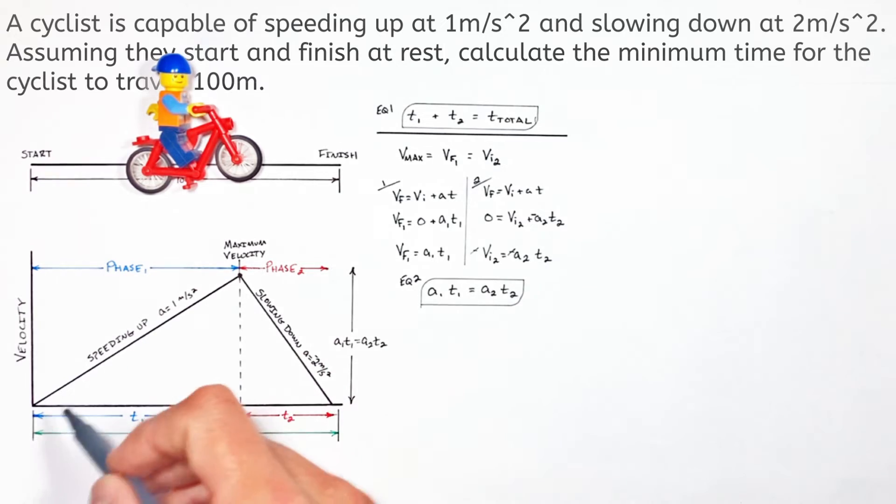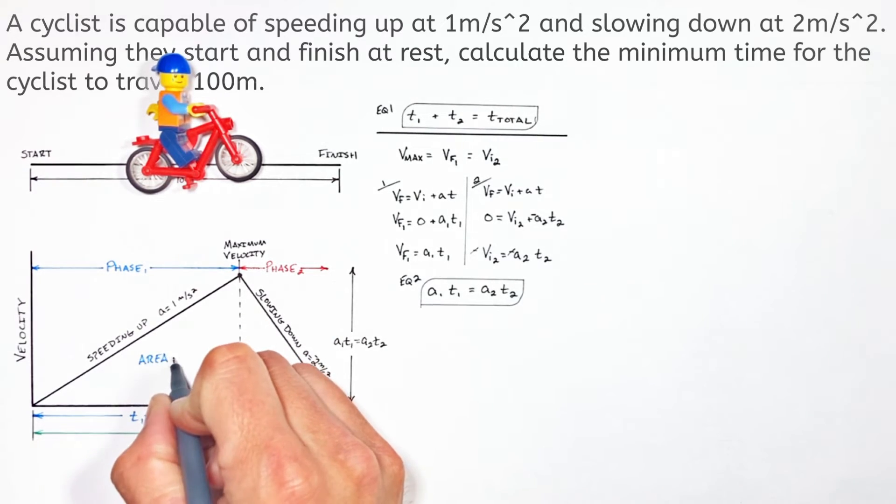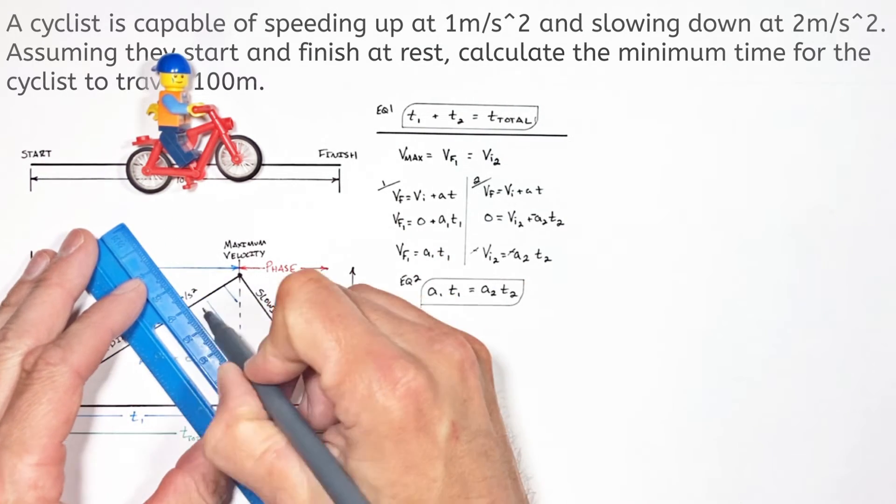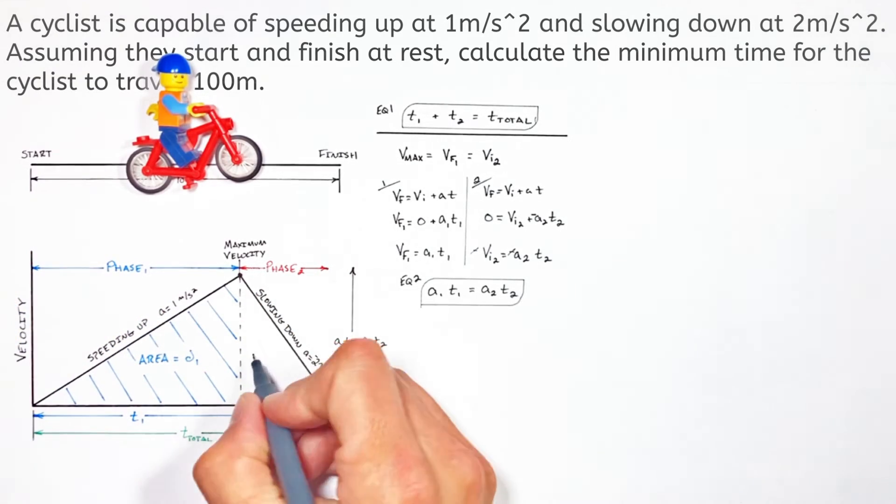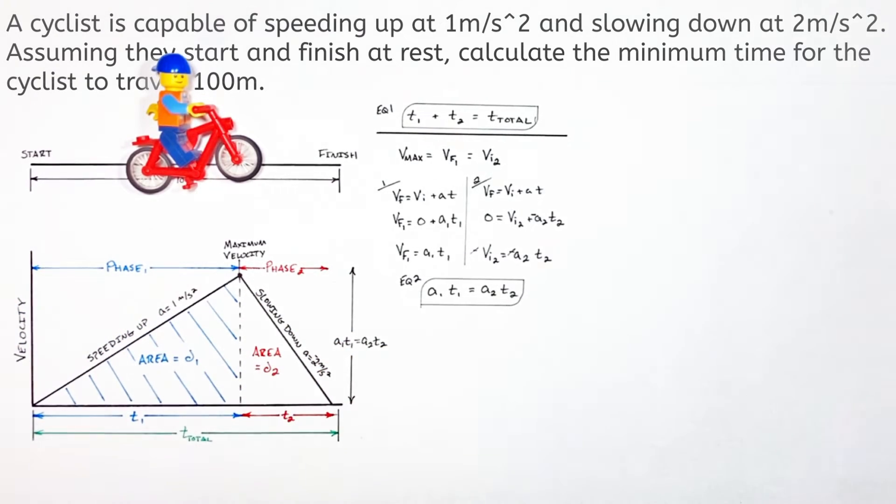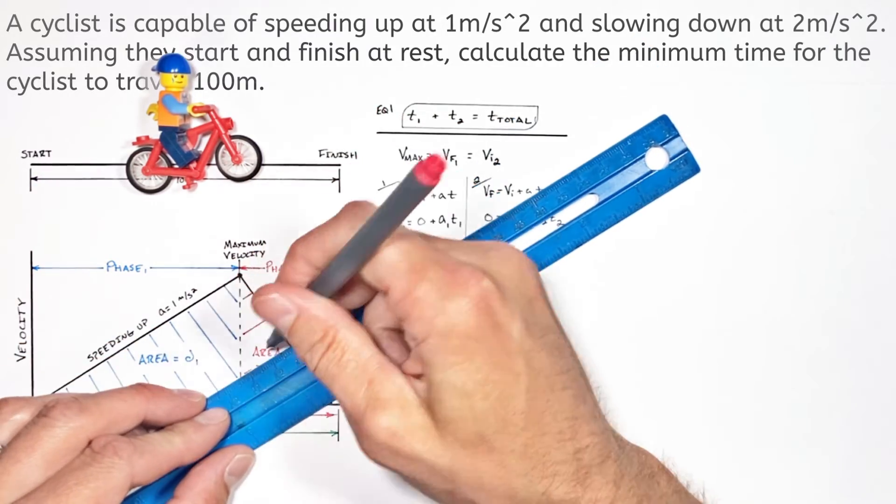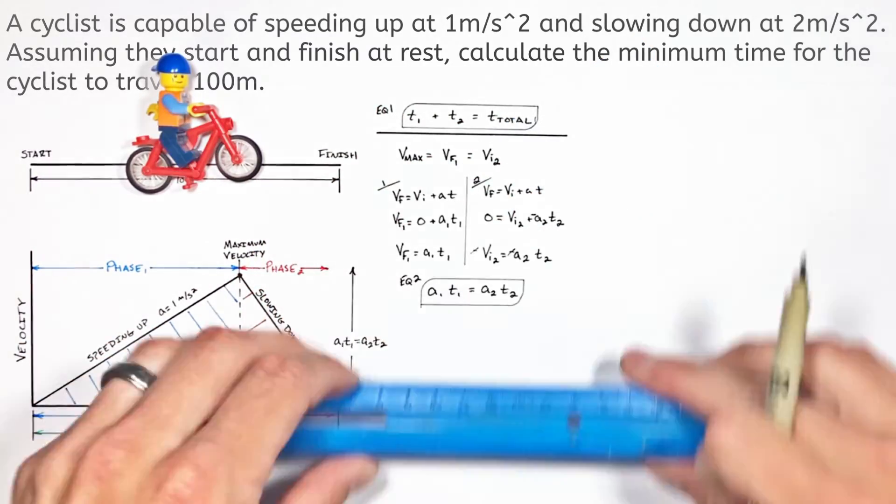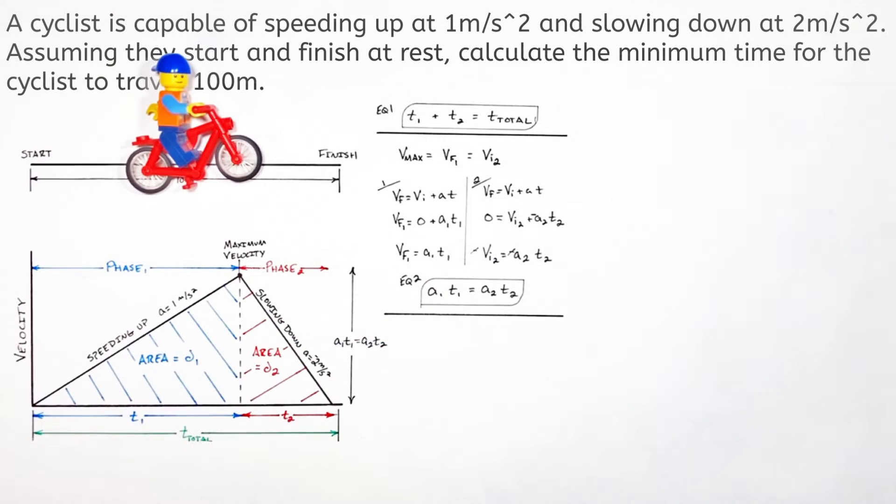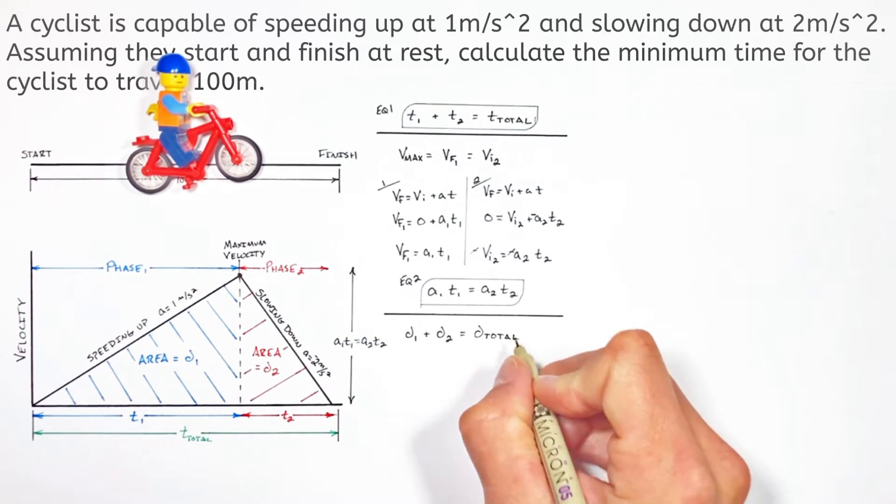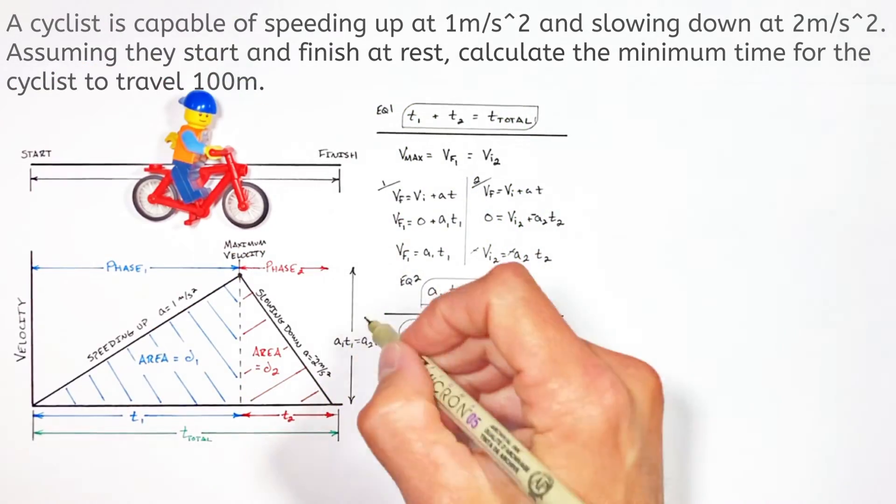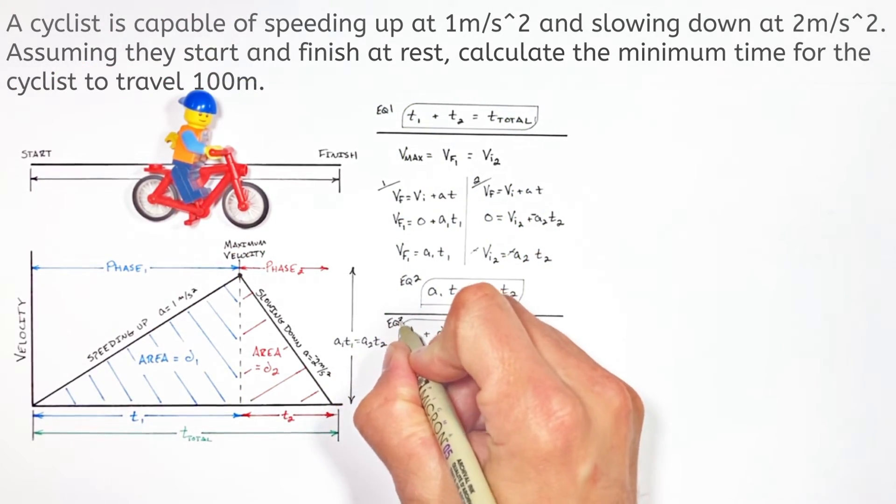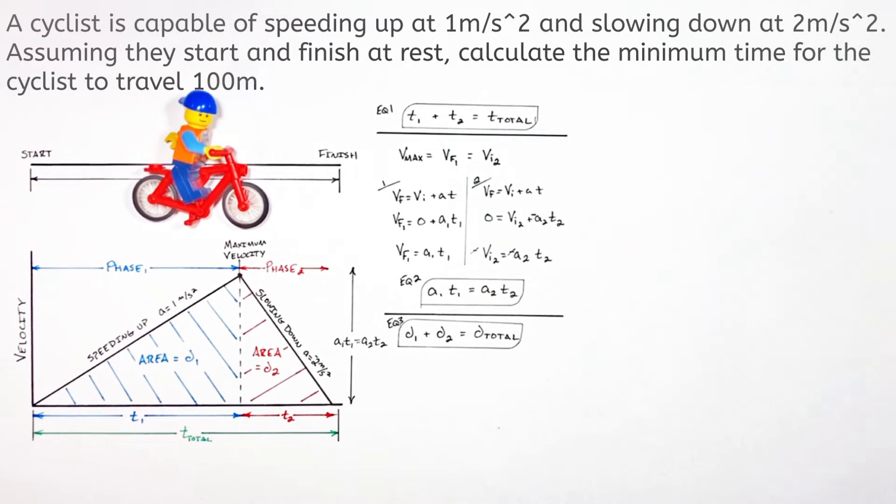So looking just at the first phase of motion, the area under the curve during the first phase is the displacement during the first phase of motion. And the area under the curve during the second phase of motion is going to be the displacement over that second phase. And from that, we can say the displacement over the first phase plus the displacement over the second phase is going to equal the total displacement in the entire problem, which gives us the third equation, which I'm going to call equation three.